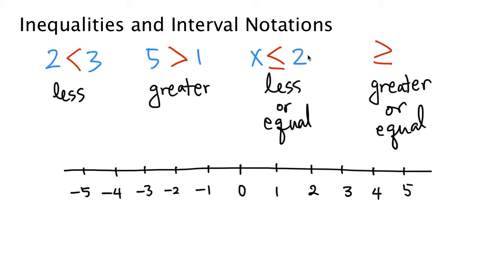When we write x less than or equal to 2, x could be 2 or anything less than 2. Now we have the number line — every real number has a place on it. For example, here is 2 and here is 3. The bigger numbers are on the right and smaller numbers are on the left. So 2 is less than 3 because 2 is on the left and 3 is on the right.